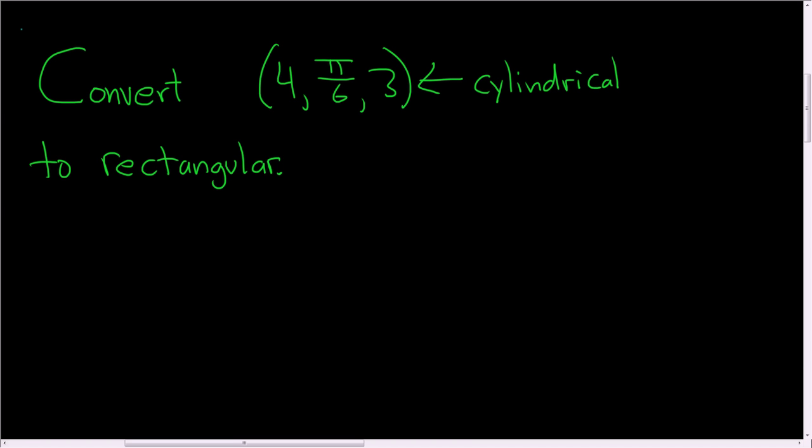We have a point in cylindrical coordinates and need to convert it to rectangular form. A cylindrical coordinate has the form (r, θ, z). All we have to do is find x, y, and z, and then we'll have our point in rectangular form.